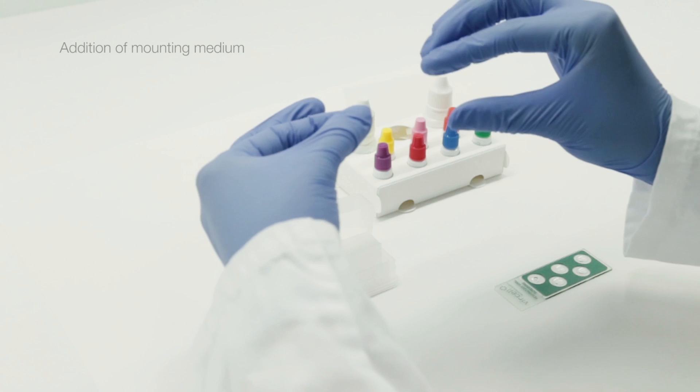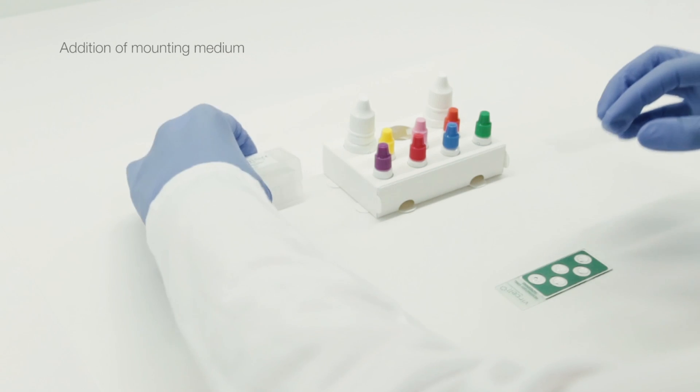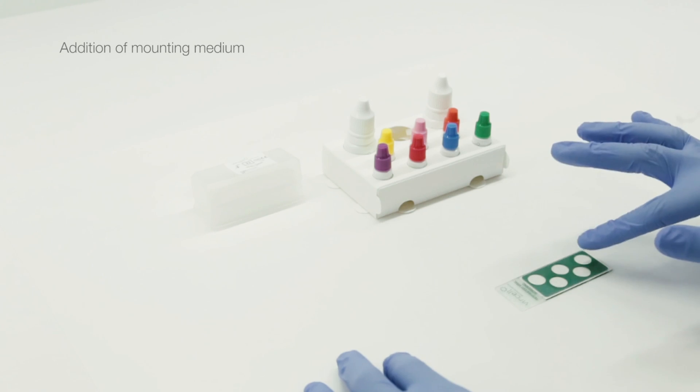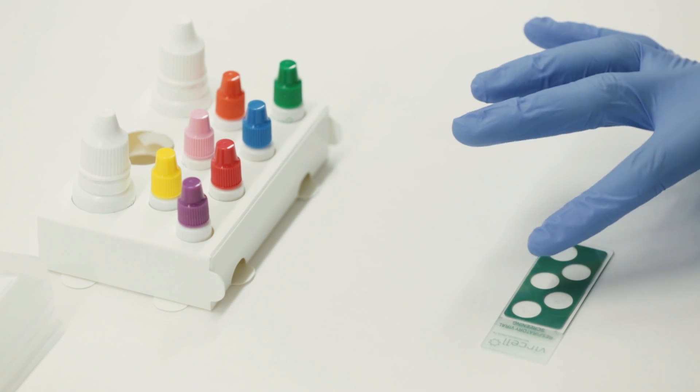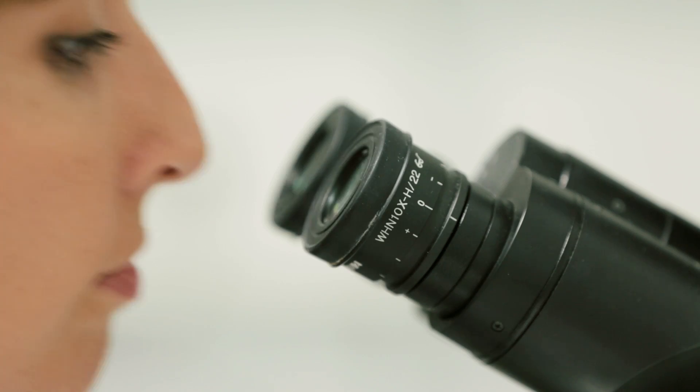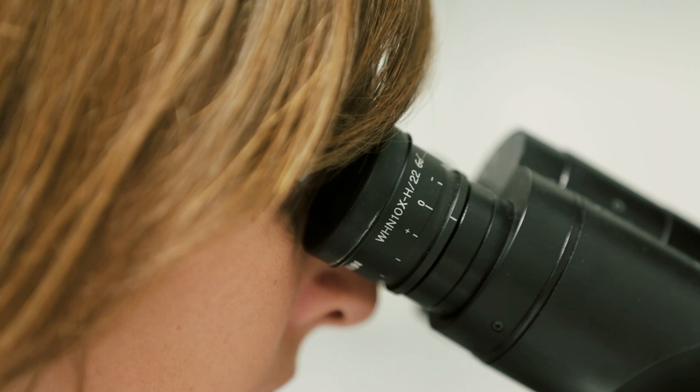Apply the VirCell mounting medium onto the slide and place the cover slip on top of it. Press gently to remove any bubbles. Now it is ready to be observed using a fluorescence microscope at 400 times magnification.